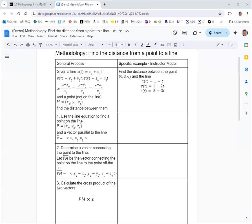In this video, we're going to see how to find the distance from a point to a line in three dimensions. The problem we're looking at is to find the distance between the point (0, 3, 6) and the line x = 1 - t, y = 1 + 2t, z = 5 + 3t.